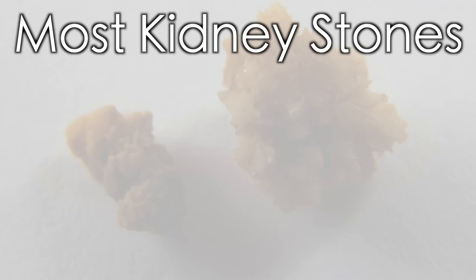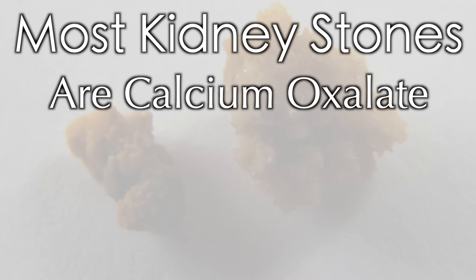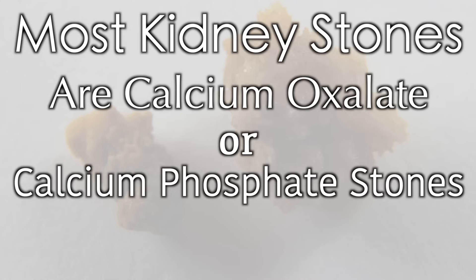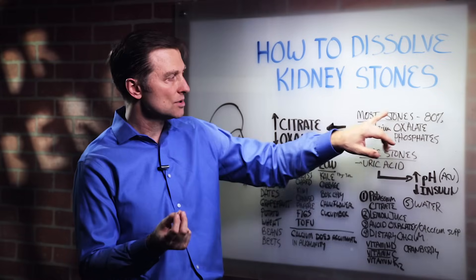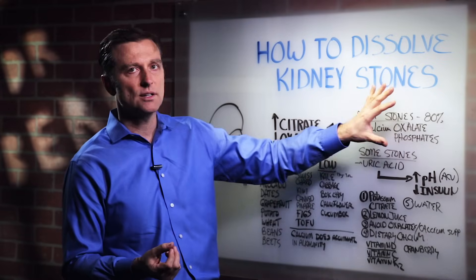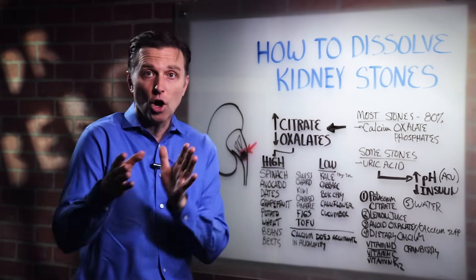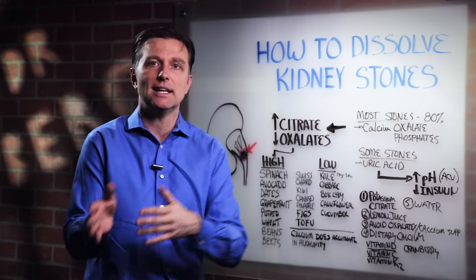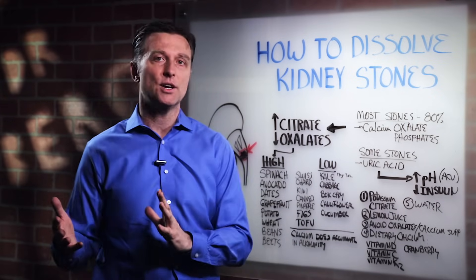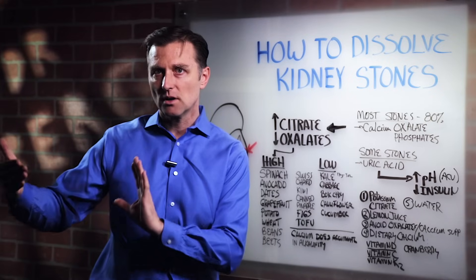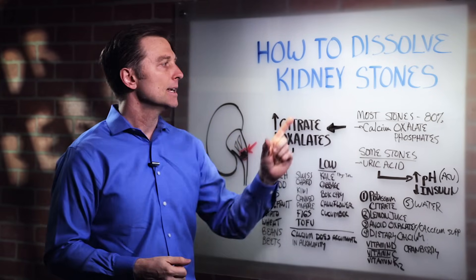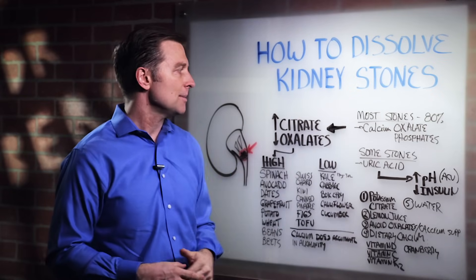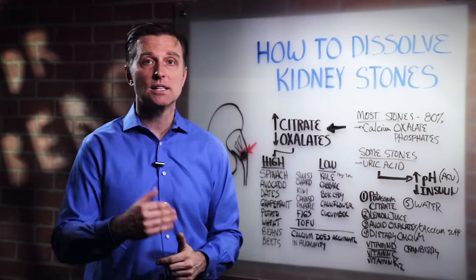Most kidney stones are calcium oxalate stones or calcium phosphate stones. About 20% or a little less than 20% of the stones are uric acid crystal stones. There are several types, but these are the main two. Gallstones are completely different than kidney stones as far as their formation — gallstones are more cholesterol stones because of lack of bile. Kidney stones, if we're talking about the most common, are calcium oxalate stones.